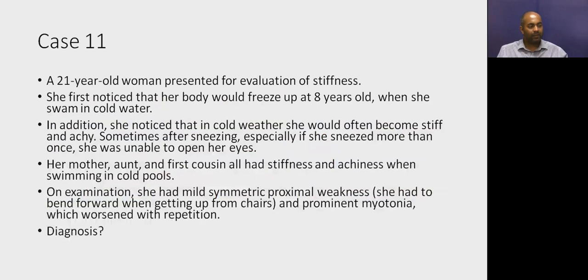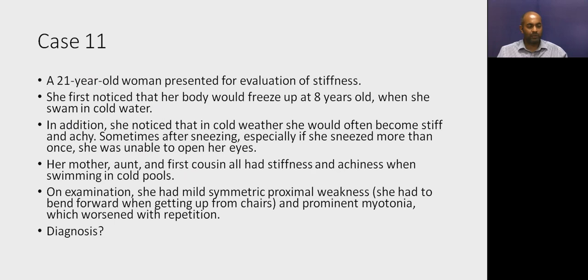Another case — Paramyotonia congenita: A 21-year-old woman with stiffness since age 8, freezing up when swimming in cold water and becoming stiff and achy in cold weather. After sneezing multiple times, she was unable to open her eyes. Her mother, aunt, and first cousin all had similar stiffness and achiness in cold pools. Examination showed mild symmetric proximal weakness and prominent myotonia that worsened with repetition. This patient has paramyotonia — a sodium channel myopathy, paramyotonia congenita.